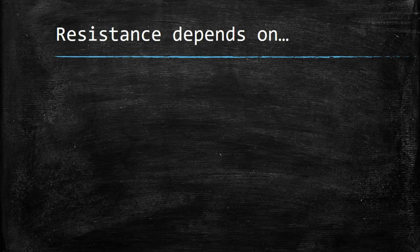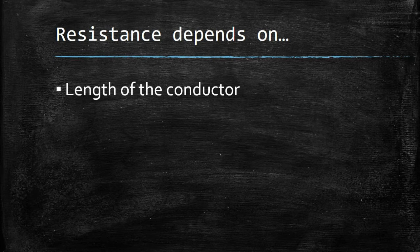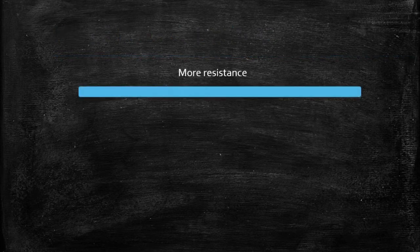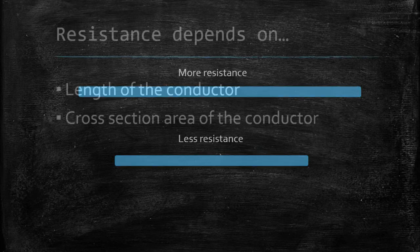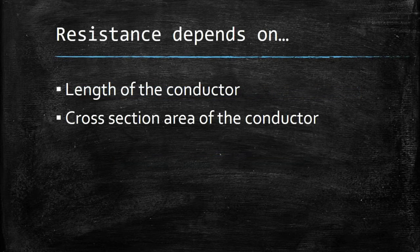Resistance depends upon four things. First is the length of the conductor. If you increase the length of the conductor you will get more resistance, and vice versa — if you reduce the length you will get less resistance. Second is the cross-section area of the conductor. Many students get confused about what cross-section area actually means.